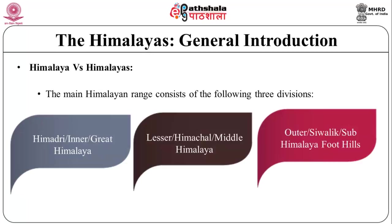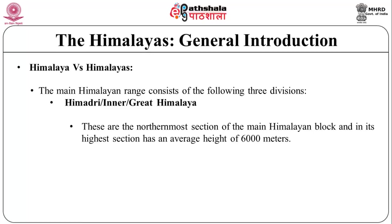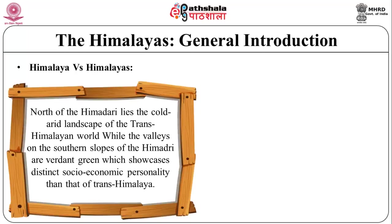The main Himalayan range consists of three divisions: Himadri or inner/great Himalayas, Lesser Himachal or middle Himalayas, and outer Shivalik or sub-Himalayas foothills. The Himadri or great Himalayas are the northernmost section of the main Himalayan block, with an average height of 6000 meters in its highest section. This section serves as an effective barrier for the monsoon winds from the Bay of Bengal, serving as an orographic divide. North of the Himalayas lies the cold arid landscape of the trans-Himalayan world, while the southern slopes are verdant green.